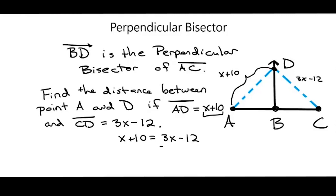So I will subtract 3x on both sides of the equation, and I'm left with negative 2x plus 10 equals negative 12. Now I will subtract 10. Now I'm left with negative 2x equals negative 22.